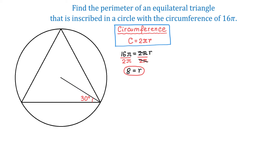From the center of the circle, let's draw a perpendicular down to the bottom side of the triangle to form a right triangle. In this right triangle, one acute angle is 30 degrees and the hypotenuse is 8 units. The bottom side of this right triangle is half the side of the equilateral triangle. We will call this side x, and we will find it using trigonometric functions.